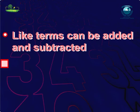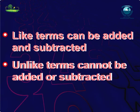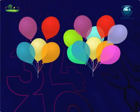If two terms are like, then you can add or subtract them. But unlike terms cannot be added or subtracted. Let's understand it.